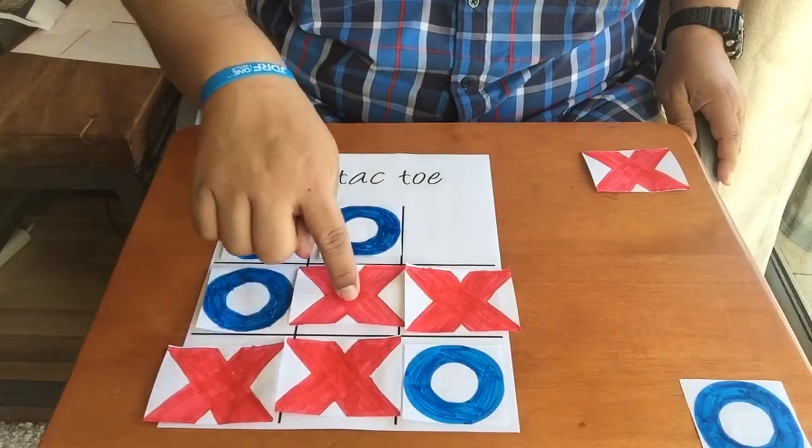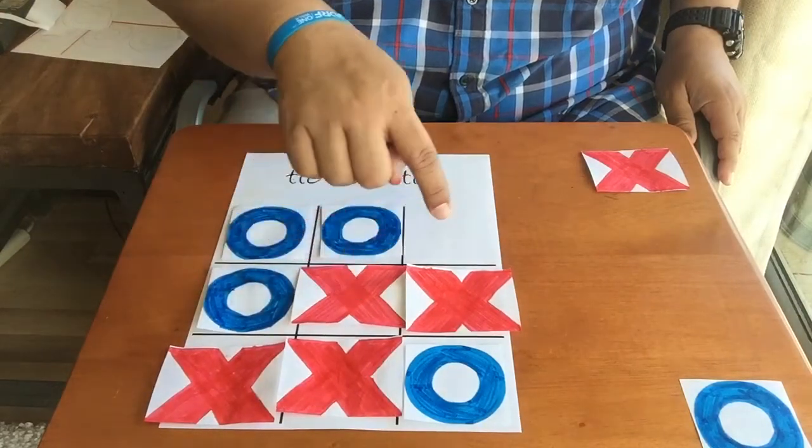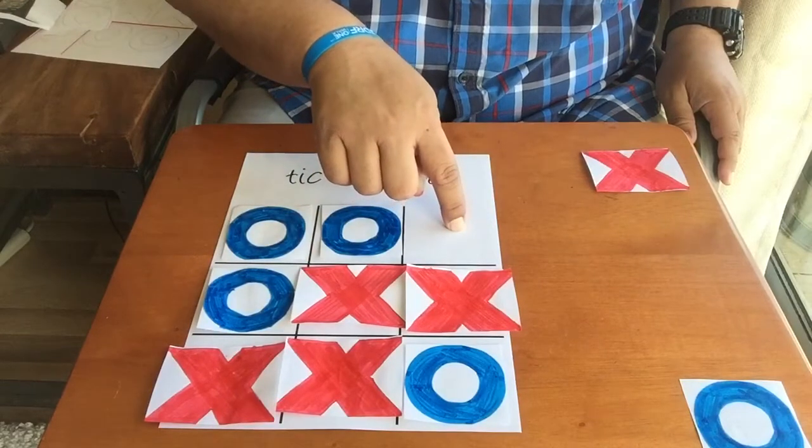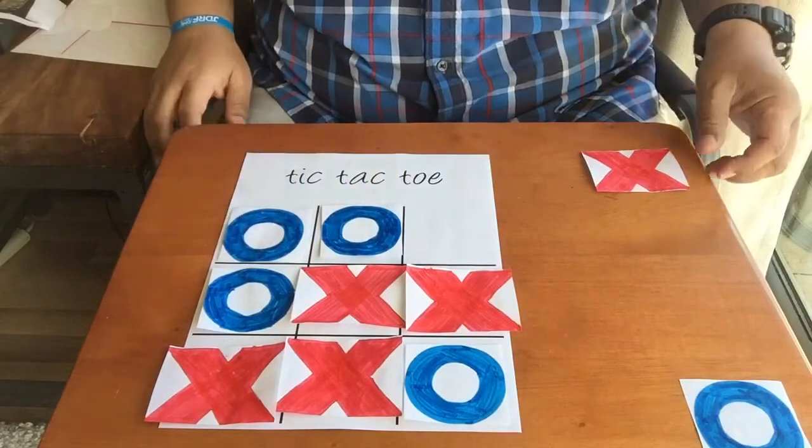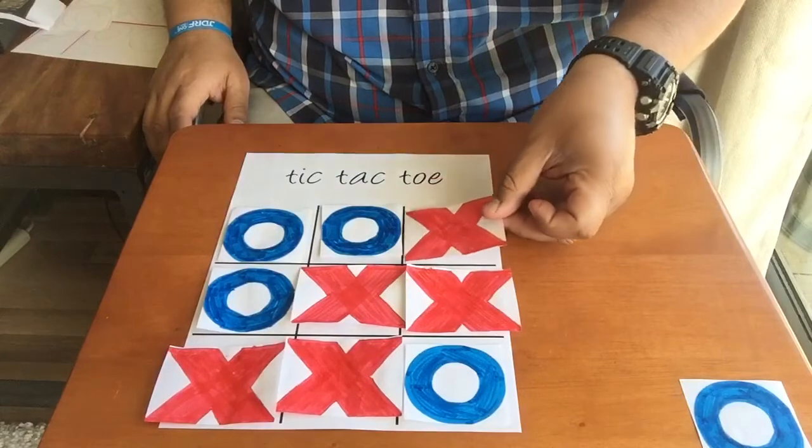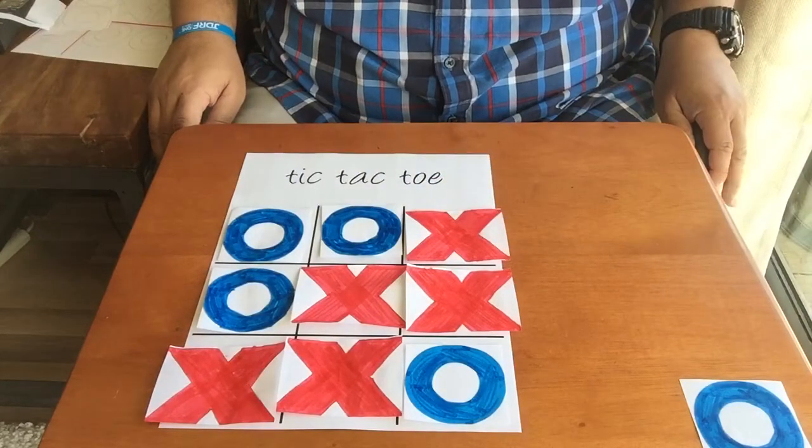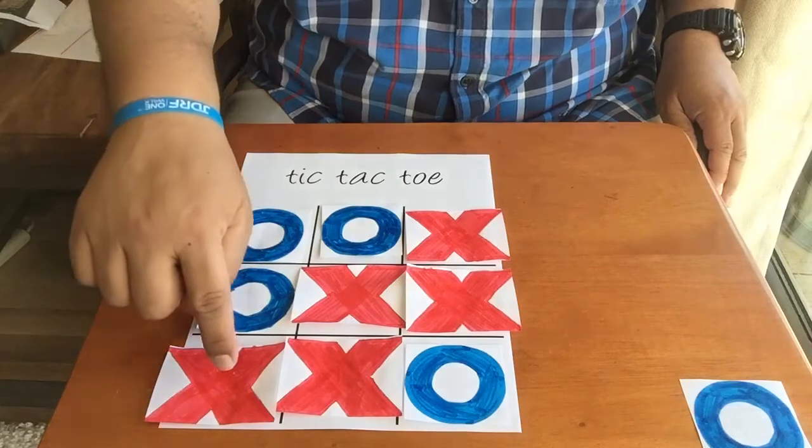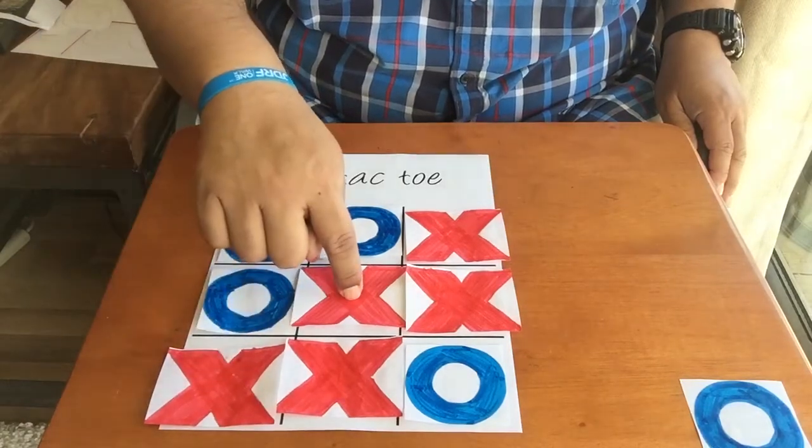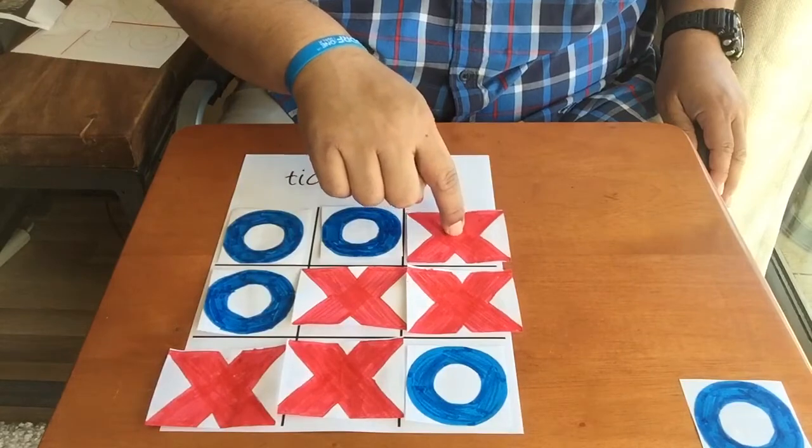O didn't go in the spot where he could have blocked me. You see I have one, two in a row. All I need is one more. But Blue didn't see that. So now it's my turn and I'm going to go right there. Can you see how I just won? One X, two X, three X's in a row.